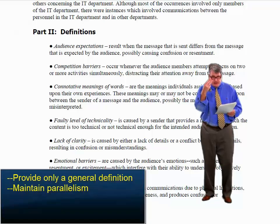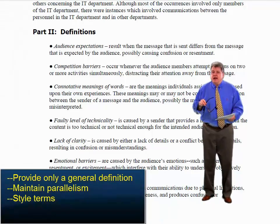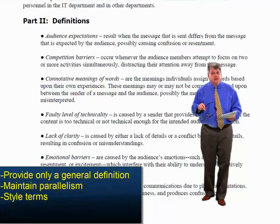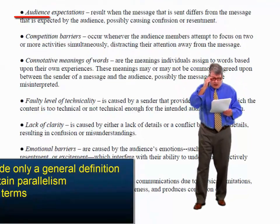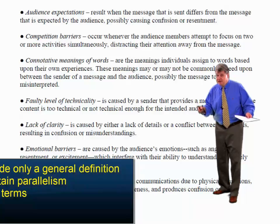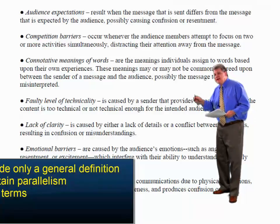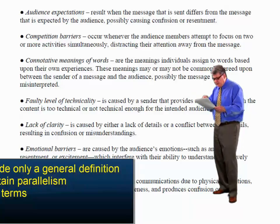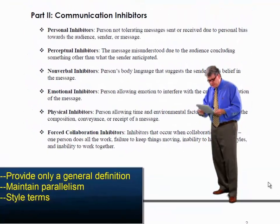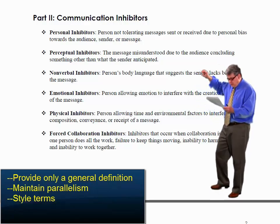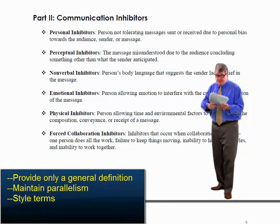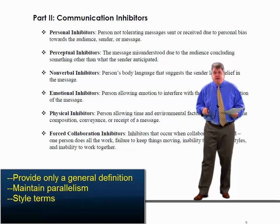The third thing that students usually get wrong is that they don't style the name of the inhibitor — in other words, it looks like the body copy. The heading for the list — audience expectations, communication barriers, connotative meanings — has to be styled differently than its definition, just as you'd see in a dictionary. Barry used italics and round bullets. Tamara used a flower bullet and bold-faced each of the communication inhibitors.